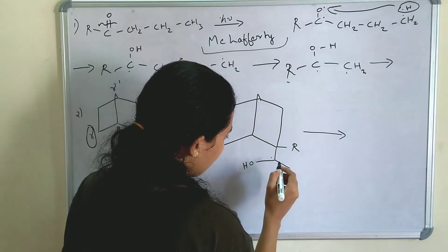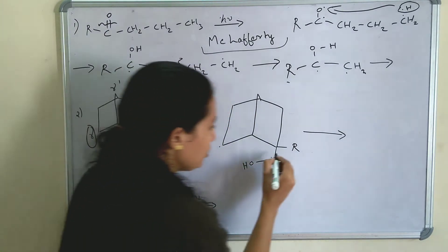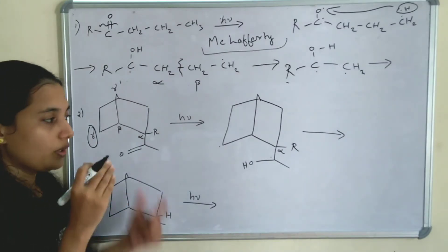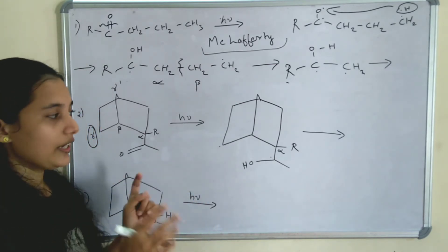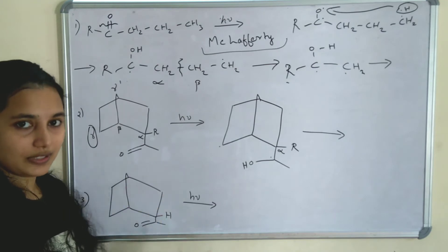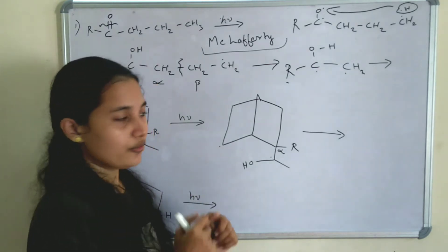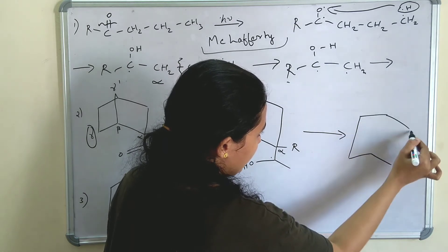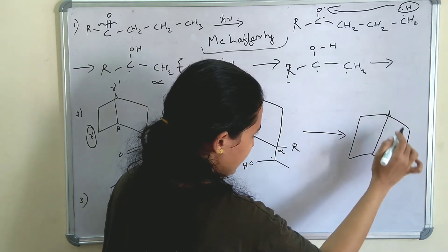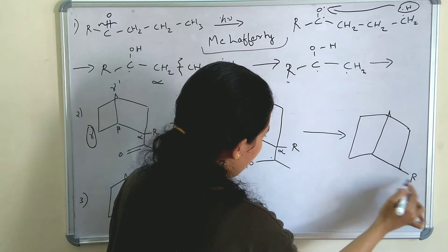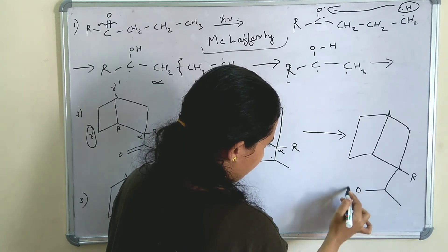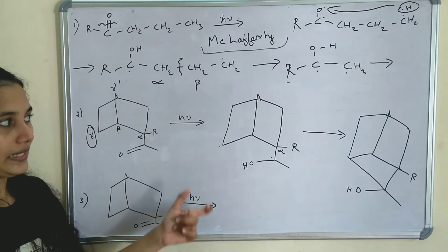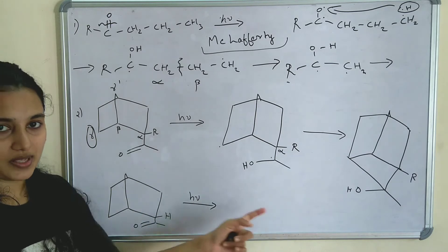But here a problem arises. This is alpha, this is beta, and this is gamma. This alpha carbon contains two alkyl groups. I already said if the alpha carbon contains two alkyl groups, it will not give Norrish type 2 reaction — it will give cyclization. So a cyclic compound is formed. The OH and the radical make a bond, and instead of Norrish type 2 reaction or alpha-beta cleavage, we get a cyclic compound. Cyclization occurs because two alkyl groups are present on the alpha carbon.